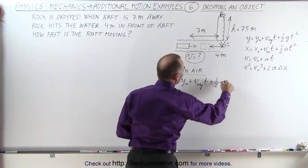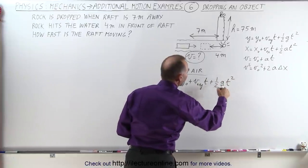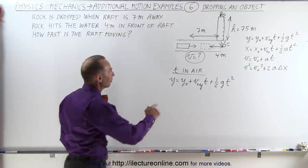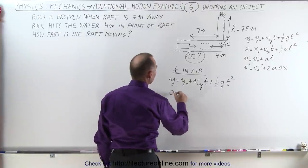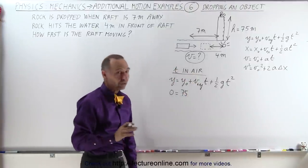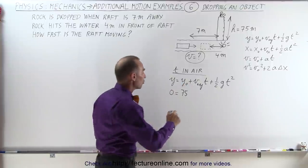Because acceleration of course is acceleration due to gravity, the final height will be 0. The initial height will be 75 meters. The initial velocity in the y direction, that's going to be 0 because the rock is simply dropped.